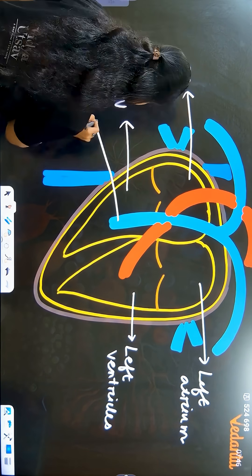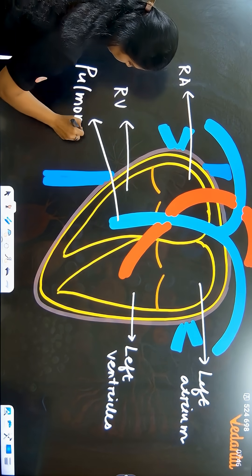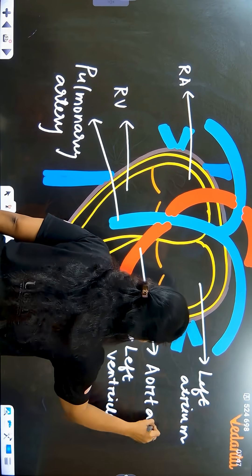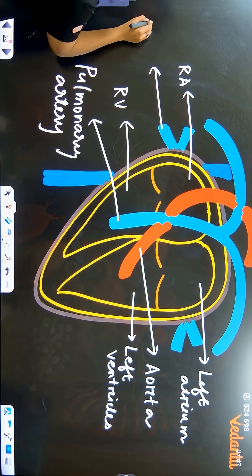Next blood vessel to label is pulmonary artery. This is pulmonary artery. This is aorta, the largest artery. This side is pulmonary veins.